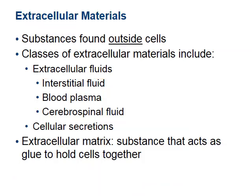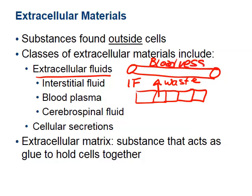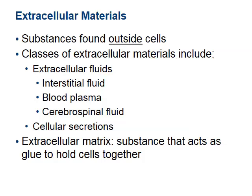There's also interstitial fluid. If we have a bunch of cells lined up, they secrete waste into the interstitial fluid, which is then picked up by a nearby blood vessel and carried away to be cleaned before returning to the heart. You can also use interstitial fluid to take in nutrients — blood drops off glucose and oxygen into the interstitial fluid, which is then picked up by the cell.